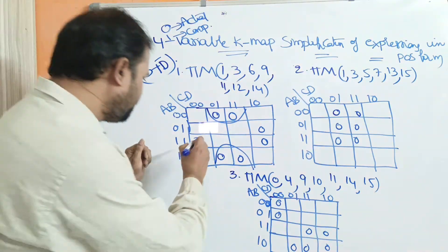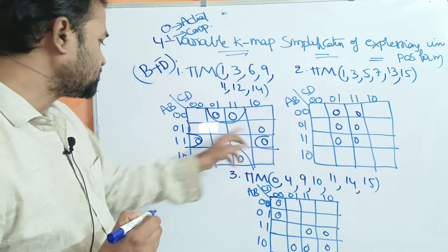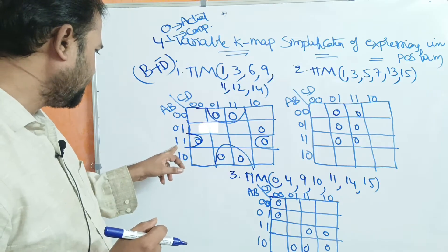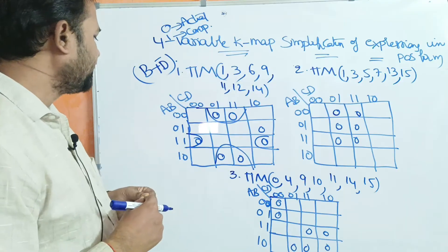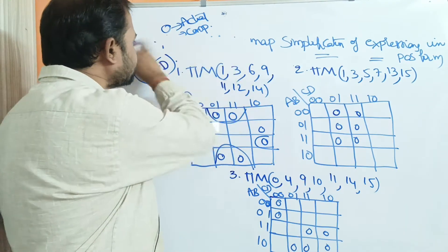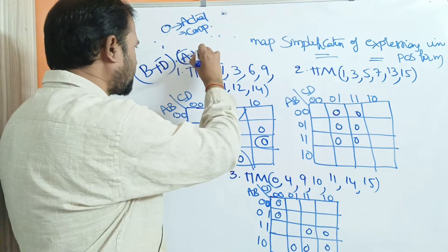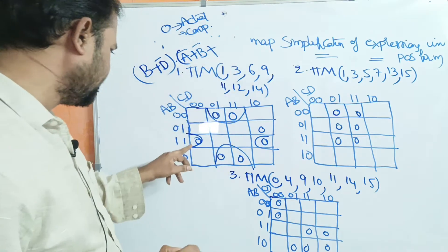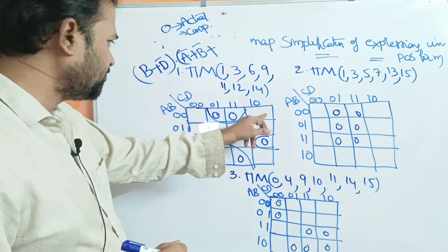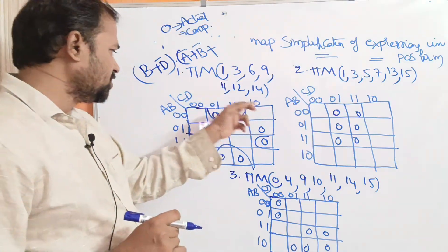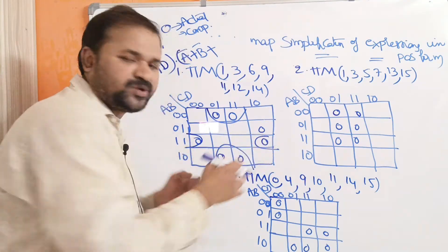Next, we can make these two opposite cells as a group. The cell values are 1 1, and one one means complement of the variable, so we write Ā + B̄. Additionally, if we observe cells 0010, these are also adjacent cells because they differ by only one variable, so we can make these two as a group.